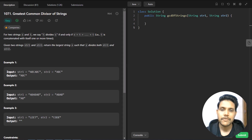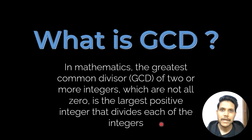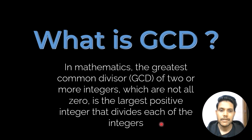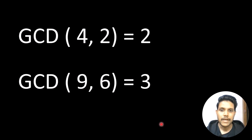There are certain examples given with the problem, so we'll first see what the question is about and how we can solve it. We'll start off with understanding what GCD is. In mathematical terms, GCD is the greatest common divisor of two or more integers — the largest positive integer that divides each of the integers. For example, for numbers four and two, the GCD is two because two is the largest integer that divides both. Similarly, for nine and six, the GCD is three.